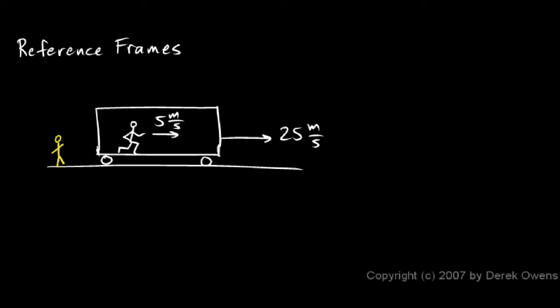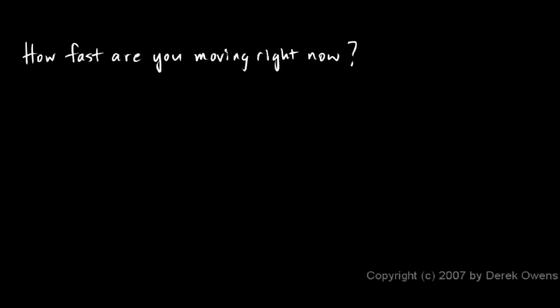If the frame of reference is the train, or you could say from the train's point of view, or with respect to the train, the person is moving at 5 meters per second. Another way you hear this phrased is the person is moving 5 meters per second relative to the train. If your frame of reference is the ground, the railroad tracks, or the earth, the person is moving at 30 meters per second relative to the earth.